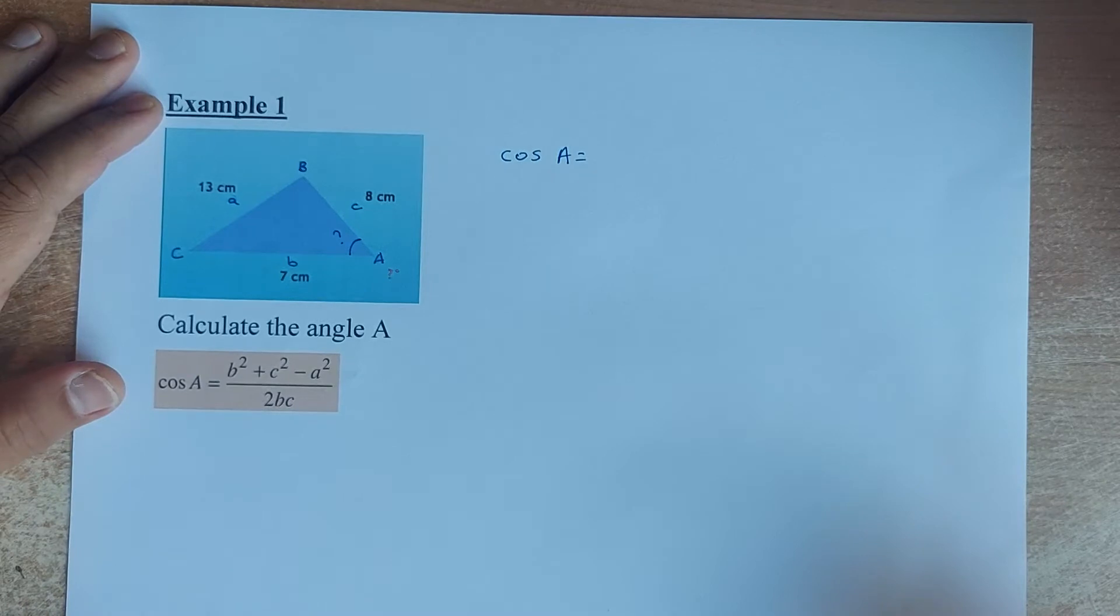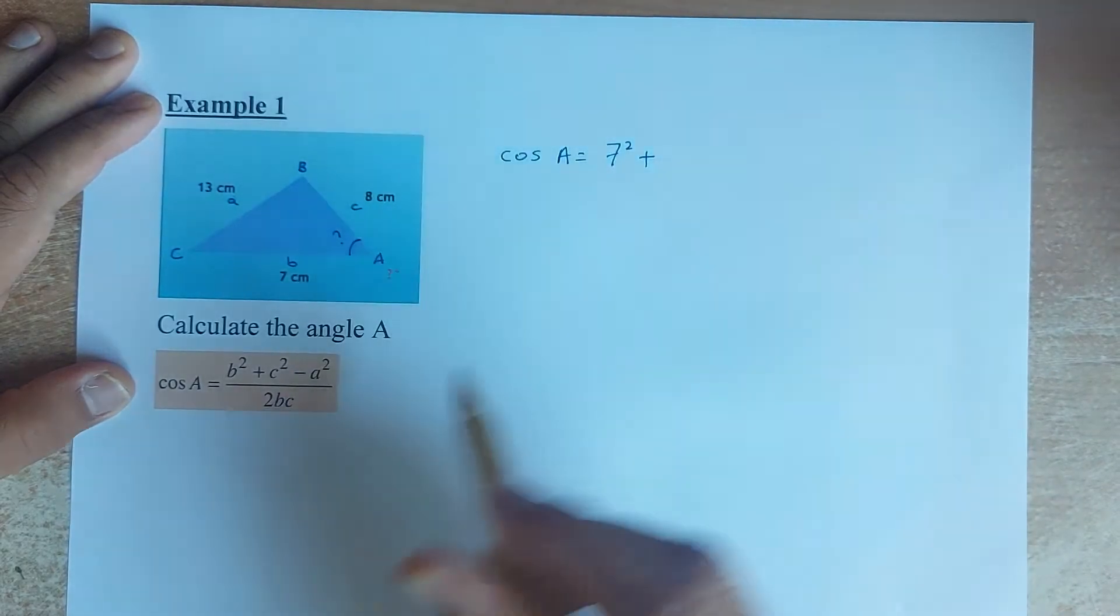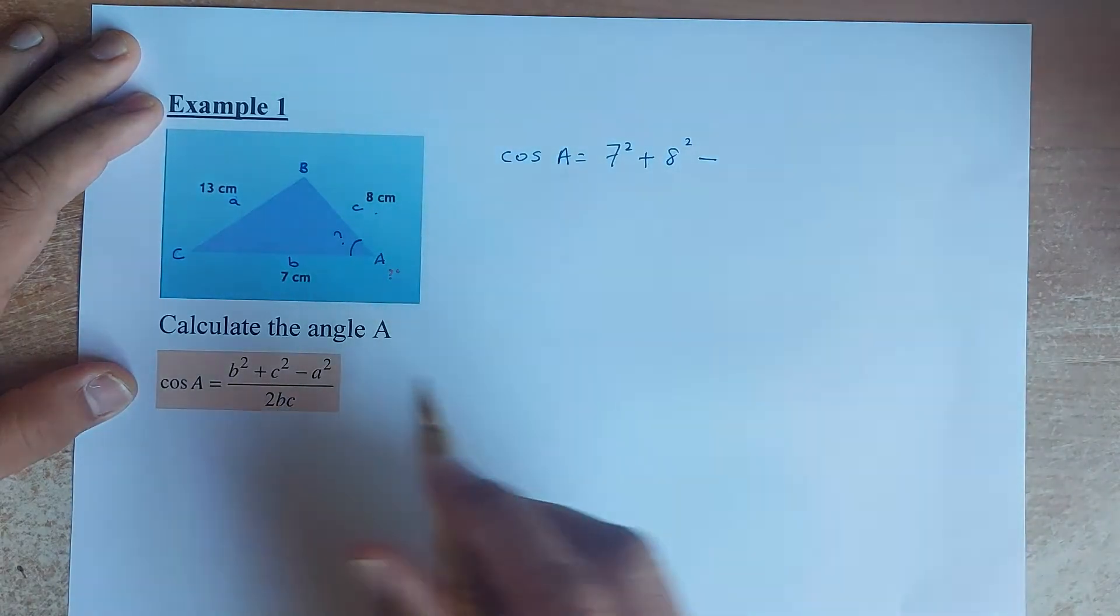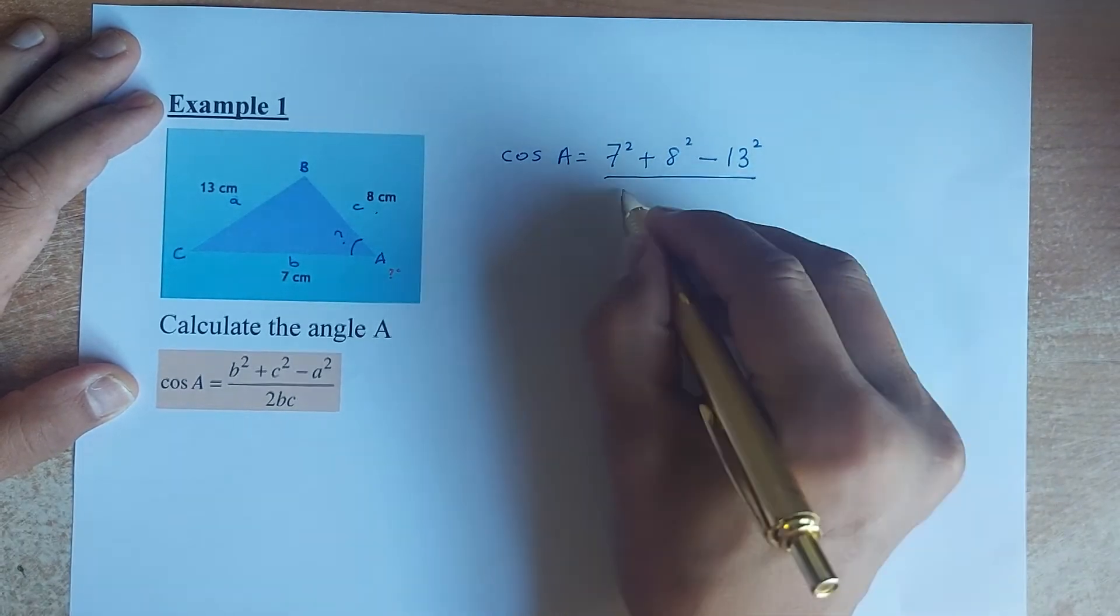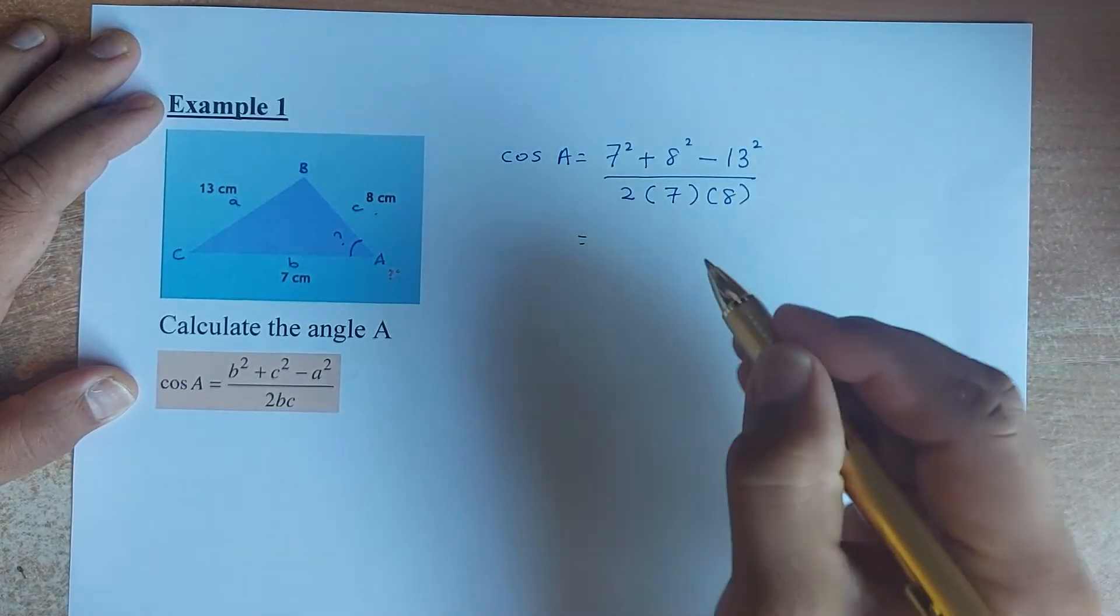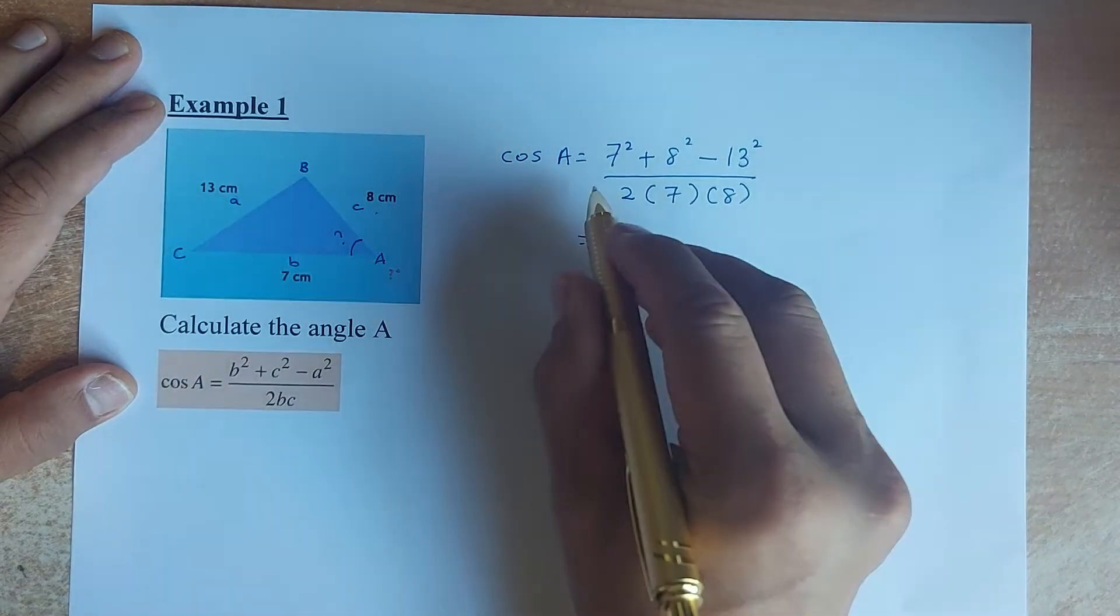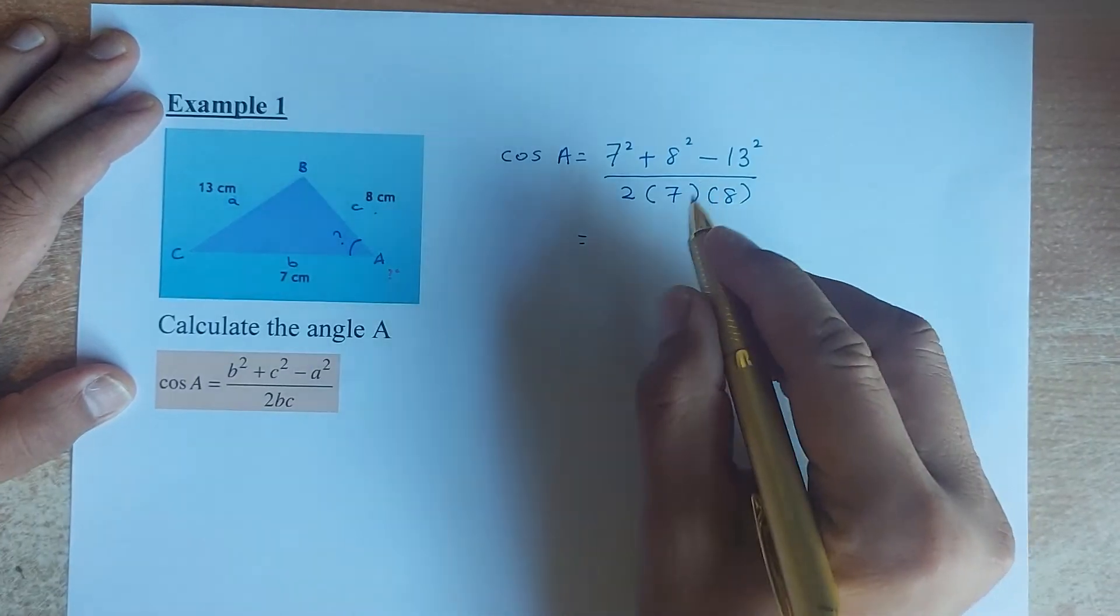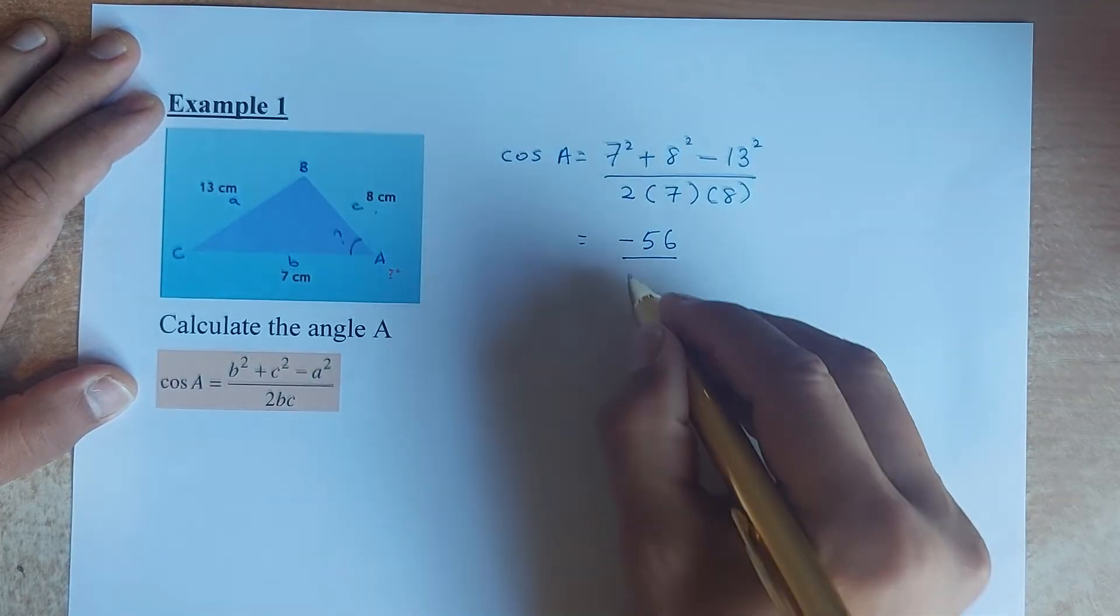Equals to now B squared. B squared is the side here, so it could be 7 squared plus C squared is 8 squared minus A squared. A squared is 13 squared. And you divide by 2 bracket 7 multiplied by 8. I suggest you don't put all the numbers in the calculator at once. I suggest you calculate the numerator and then you calculate the denominator. 7 squared plus 8 squared minus 13 squared comes up to negative 56. And then 2 times 7 times 8 comes up to 112.